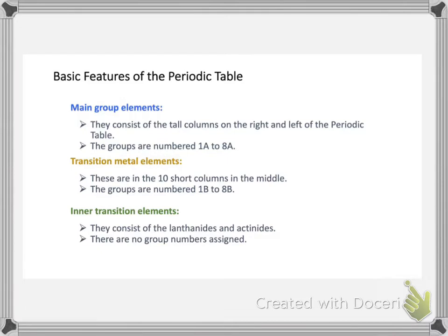Inside the periodic table there are also large blocks of elements that have names. We've talked about metals, nonmetals, and metalloids — but here's another way to classify the elements. We have three areas: main group elements, transition metal elements, and inner transition elements. Let me go to the periodic table to show you where these larger groups are.